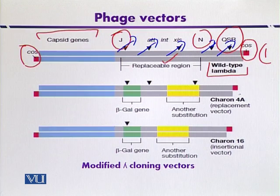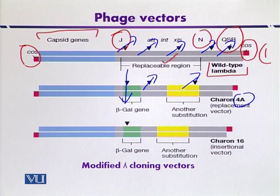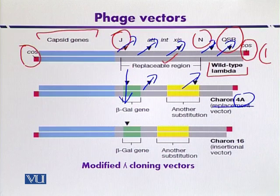One of the examples is Charon IVA. Here, two or three restriction sites are present for EcoR1. The non-essential DNA fragment, after digestion with EcoR1, can be removed, and the foreign DNA can be inserted within the beta-galactosidase gene. Once it is inserted, expression is lost, which indicates the presence of the foreign gene. Because the non-essential fragment is removed, it is called a replacement vector.